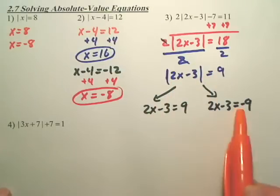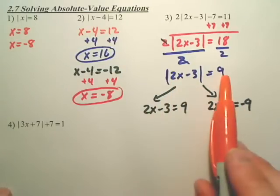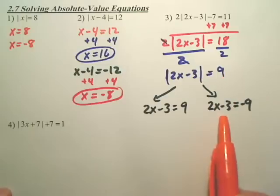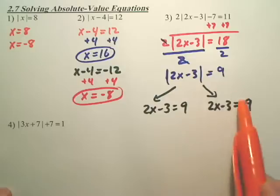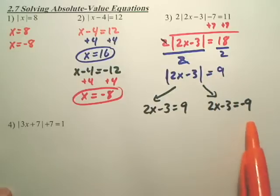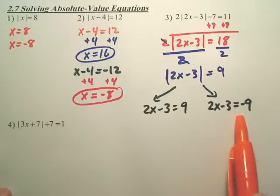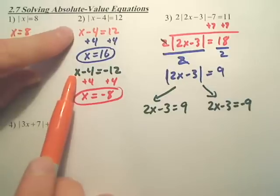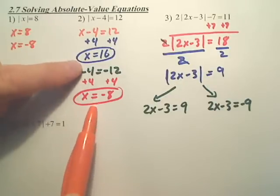With absolute values, you make two equations. One, where you get your normal equation. The other one, where you set this piece equal to the opposite of that. So in this situation, negative 9. So we basically make two equations, solve each of them. See right here? We made two equations. We solved each of them.